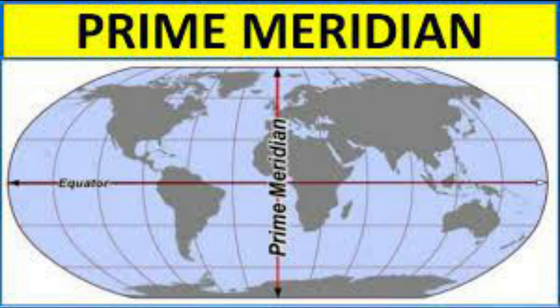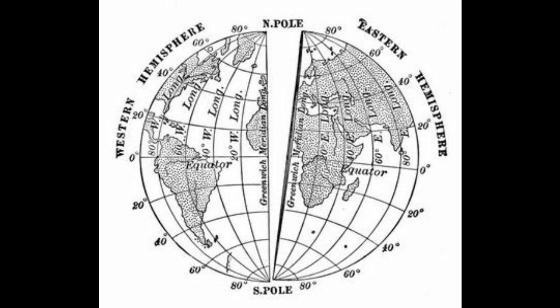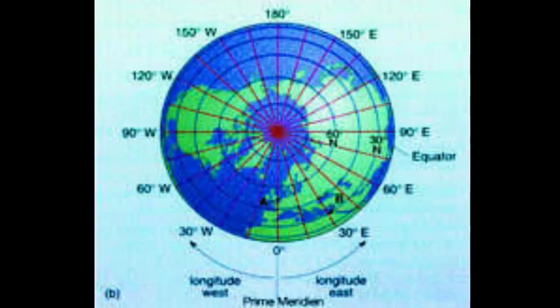The prime meridian is zero degrees, which passes through Greenwich in London. Lines of longitude are measured from the center of the earth. The prime meridian divides the earth into the eastern hemisphere and the western hemisphere. There are totally 360 lines of longitude, and these lines merge at the poles. It equally divides into 180 degrees west and 180 degrees east — zero degree to 180 degrees west is called the western longitudes.